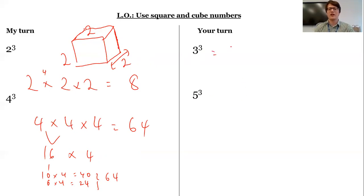Okay, so it's the same as three times three times three. Three times three is nine. Times three is 27. And then again, five times five times five. Five times five is 25. Times five is 125.